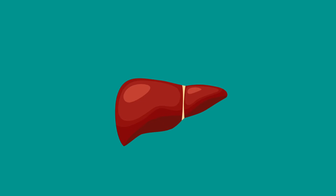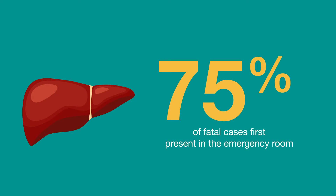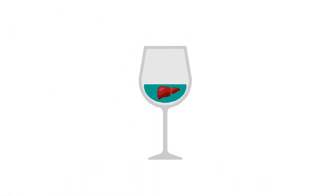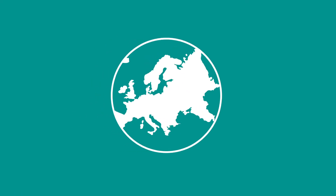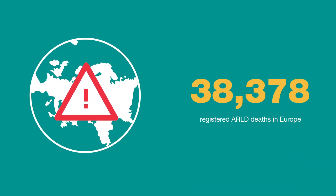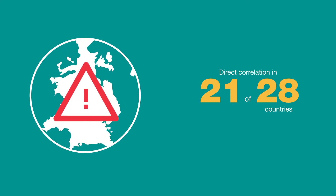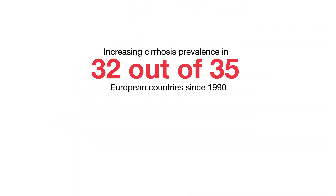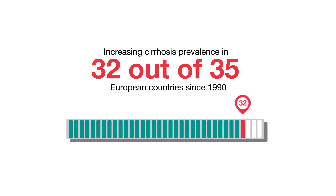Alcohol-related liver disease, or ARLD, is a common cause of liver damage. It develops silently with few symptoms, and often too late to reverse the damage. ARLD is associated with significant mortality worldwide, and in Europe, where alcohol consumption is directly correlated with liver disease deaths, the complications of ARLD are also on the rise in most of Europe.